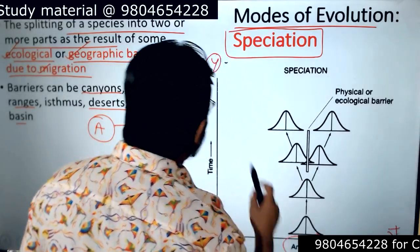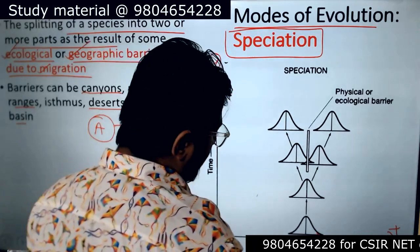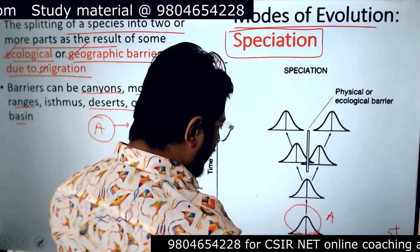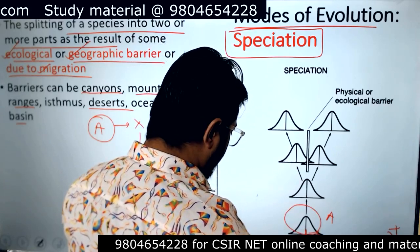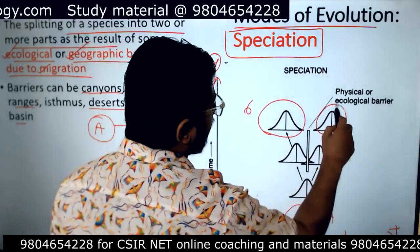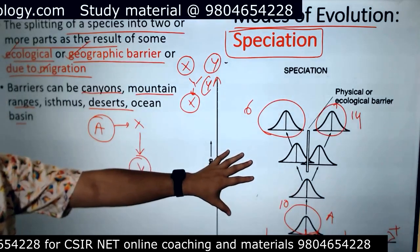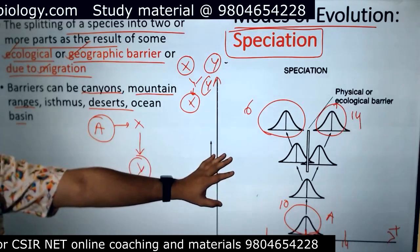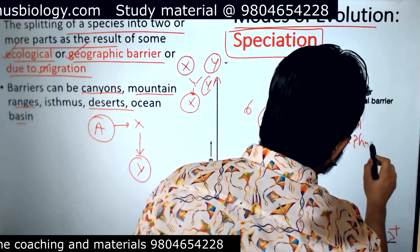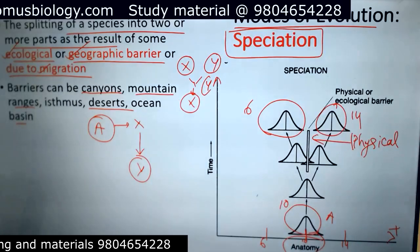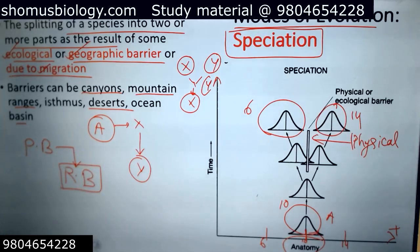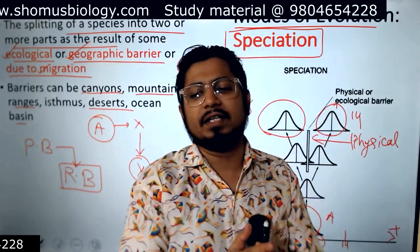For example, here you can see anatomy on the x-axis and time on the y-axis. The anatomy was fixed for the ancestor and slowly shifted to something else. Looking at length as a parameter: the length was earlier 10 centimeters, shifting towards 6 centimeters on one side and 14 centimeters on the other. This could represent, for example, the beak length of a bird. These modifications are created based on physical barriers, which then lead to reproductive isolation.